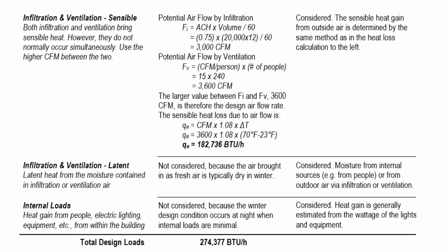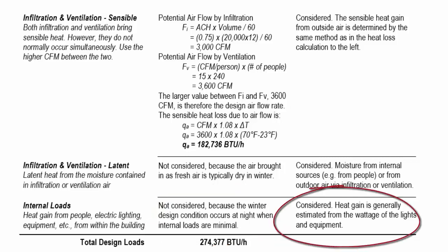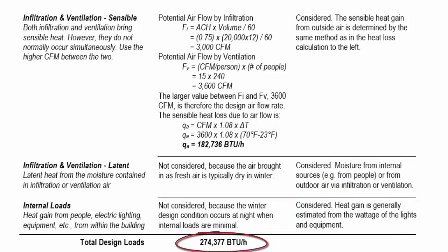Lastly, internal loads — including heat gain from people, electric lighting, equipment, etc. — are not considered for heating design load because the winter design condition occurs at night when internal loads are minimum, but will be considered for cooling design load. The heat gain is generally estimated from the wattage of lights and equipment. At the end, the total winter heating design load is estimated at 274,377 BTU per hour, and this number will be used to size the heating equipment. Design load calculations are often carried out using computer programs; however, understanding the parameters and procedures is crucial to designers in assessing the impact of design decisions.